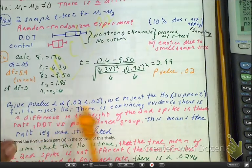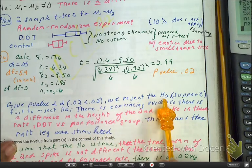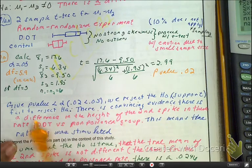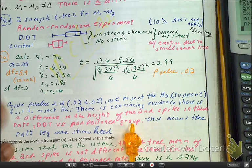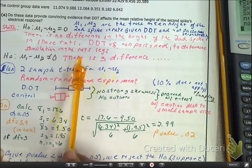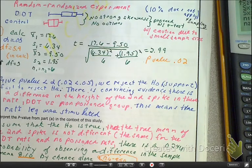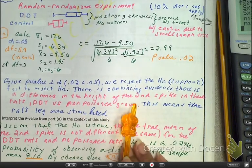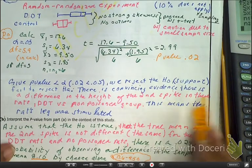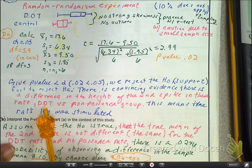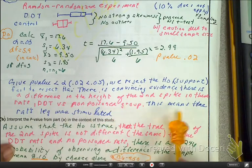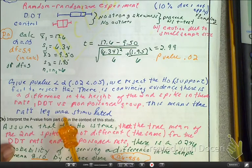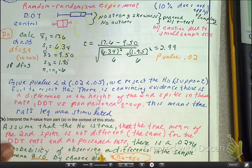So given that we have a P-value that's less than our alpha, and here are the values, we reject the H0. We support or fail to reject the HA. There's convincing evidence that there is a difference, and notice the reason I have this in pink is because I'm rewriting everything I said here. So there's convincing evidence that there is a difference in the height of the second spike in these rats, DDT versus non-poisoned group. So this means that the rat's leg was stimulated. Okay, isn't that the bottom line?